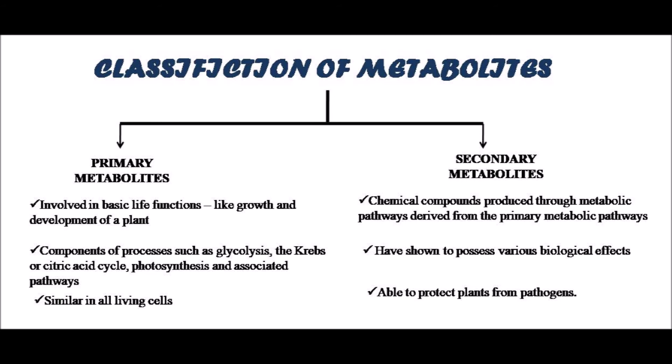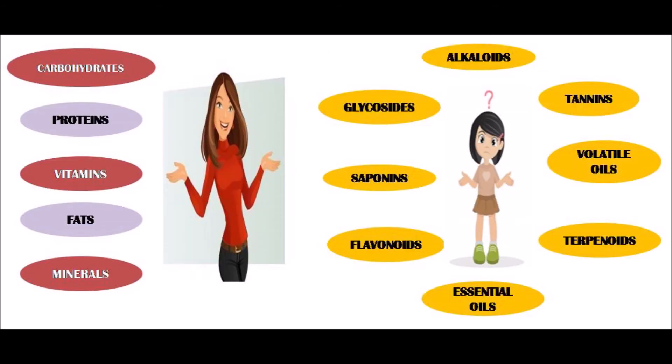The different categories of primary and secondary metabolites: the categories on the left side are well known to all of us — carbohydrates, proteins, vitamins, fats, minerals. These are the primary metabolites which provide us energy, strength, etc. The categories on the right side are less known, and those are our center of discussion — like alkaloids, tannins, terpenoids, etc. — so that the next time we hear about them, we should not look confused.